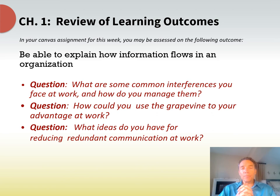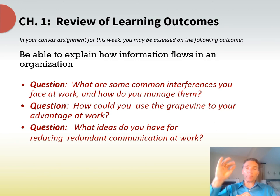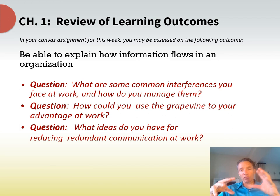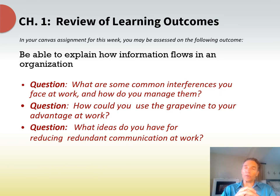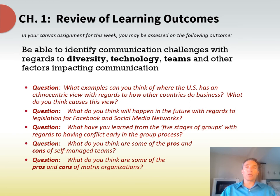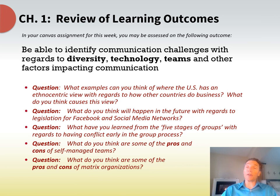So those are your key terms out of chapter one. Reviewing your learning outcomes: the first key learning outcome is to be able to explain how information flows in an organization — we talked about up, down, sideways, written, formal, and informal. The second learning outcome is to be able to identify communication challenges with regards to diversity, technology, teams, and other factors impacting communication. You see questions related to both learning outcomes listed, and these are all fair game for your week one chapter one assignment.